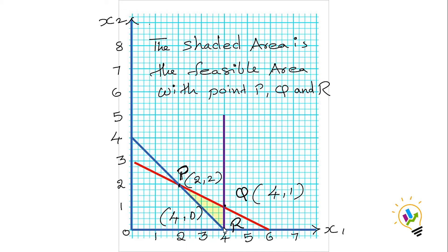The three corner points of the feasible region are identified from the graph: point P is at (2, 2), point Q is at (4, 1), and point R is at (4, 0). These three points form the boundaries of the feasible area.